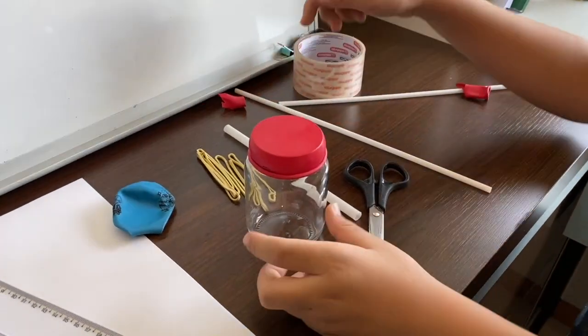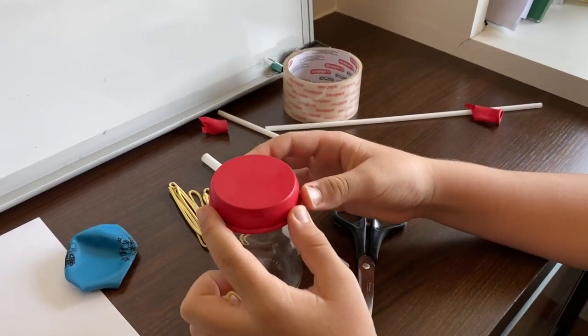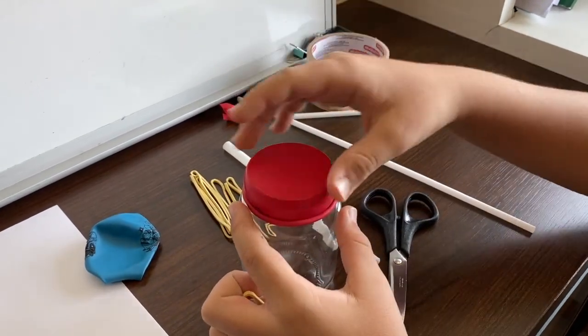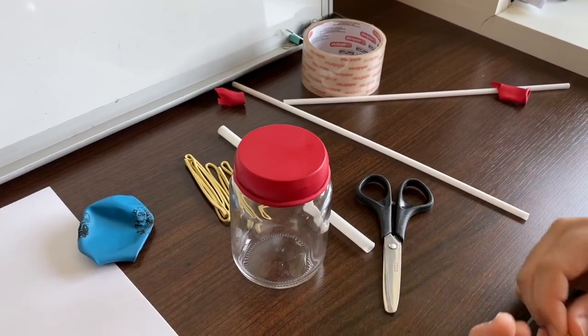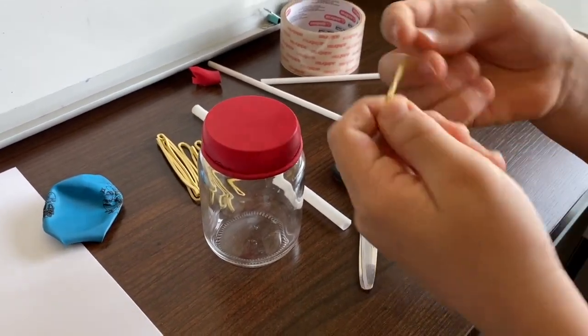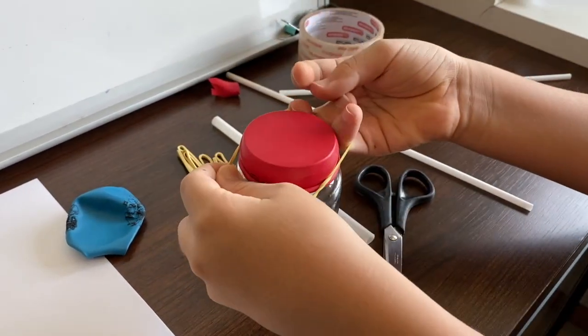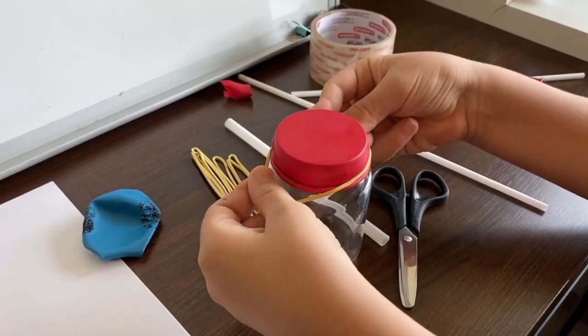We cut the balloon and put the part without the neck on the top of the glass jar. Now we're going to coat it, now we're going to make this so it won't go away.